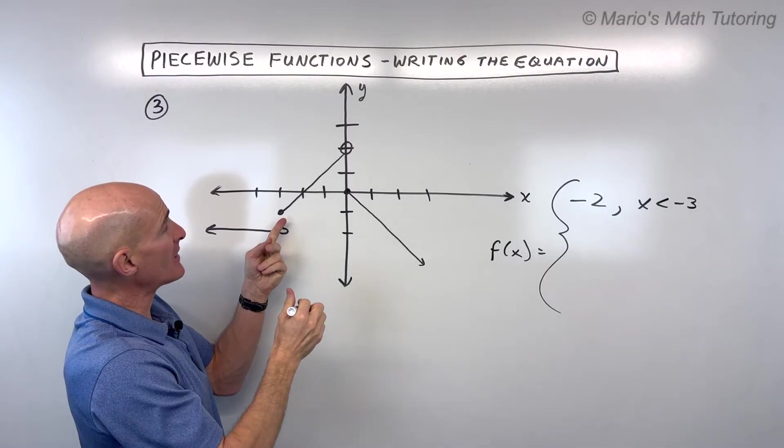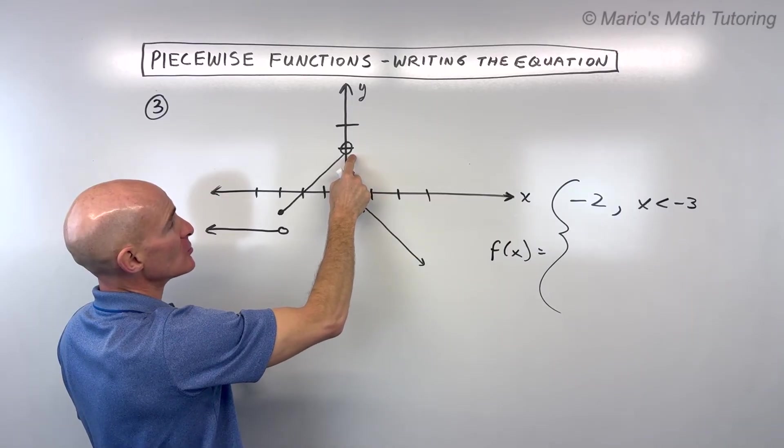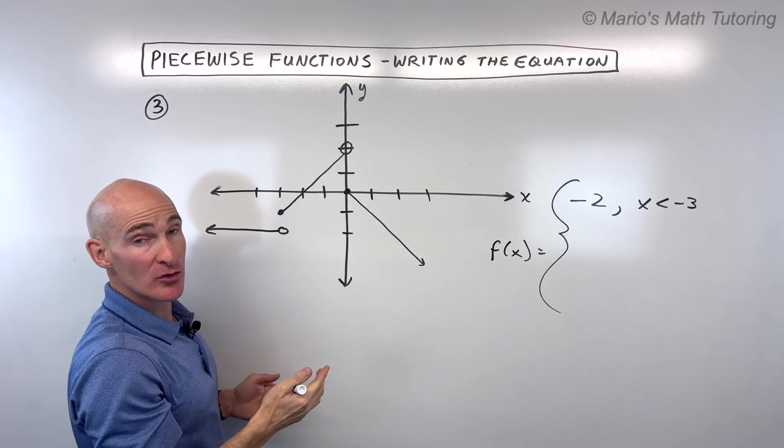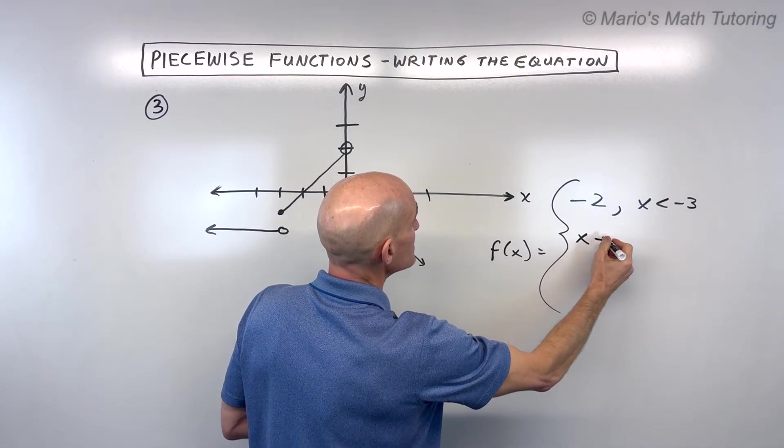Now for the next line, again visualizing this as a continuous line, it has a y-intercept of 2 and it has a slope of rise 2 run 2. Two over two is 1. So that means that this line is going to be 1x + 2, or y = 1x + 2.